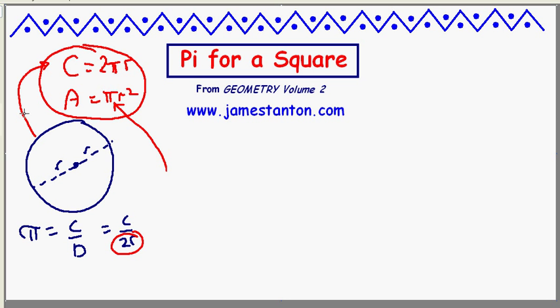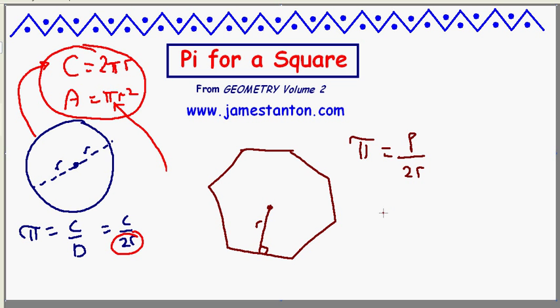Why stop there? Let's define the value of pi for any regular polygon. There's a regular septagon or something. Define the radius to be the short radius. I claim if you set pi to be perimeter over twice that short radius, C equals 2 pi r works, and area is pi r squared works. Go for it.